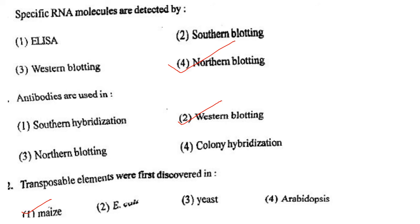Next one: Antibodies are used in option 1, Southern hybridization; option 2, Western blotting; option 3, Northern blotting; option 4, colony hybridization. Answer is option 2: Western blotting.